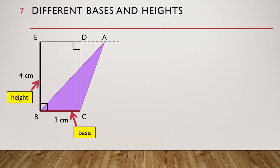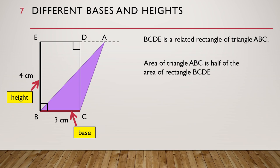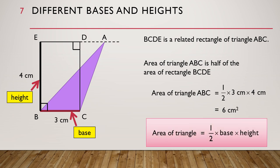Now let's look at triangle ABC when it is a slanted triangle. Just like before, we can draw the related rectangle BCDE of triangle ABC. Then BC will be the base and BE will be the height. BCDE is the related rectangle of triangle ABC. The area of triangle ABC is half of the area of rectangle BCDE, so the area of triangle ABC is equal to half times 3 centimeters times 4 centimeters, which is equal to 6 square centimeters. The area of a triangle is equal to half times base times height.